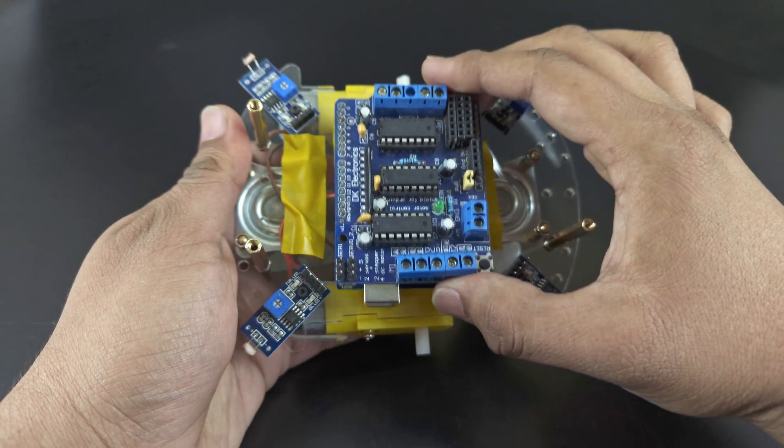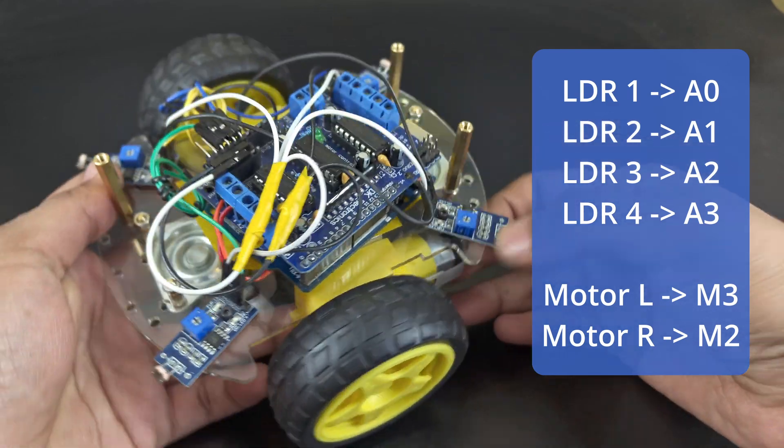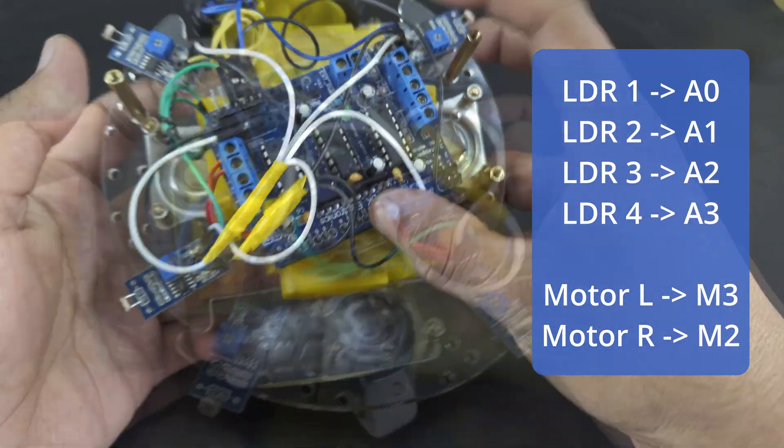After that, let's put the Arduino in and connect everything together. Connection diagram is in the description and the pin references are shown on the screen.